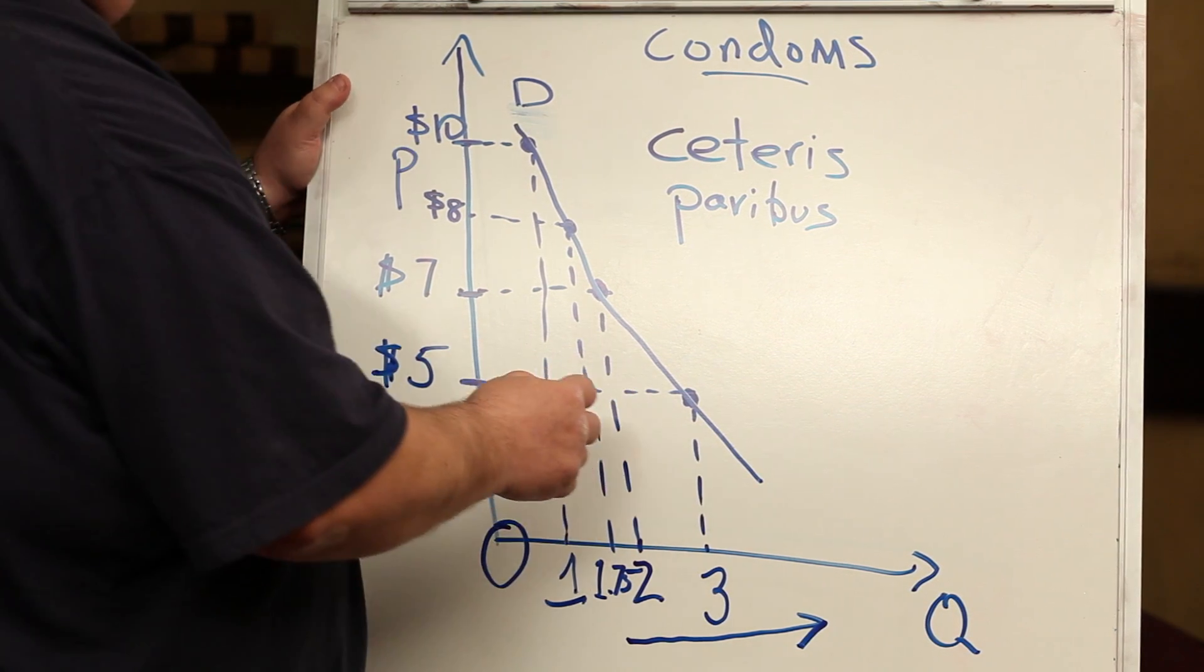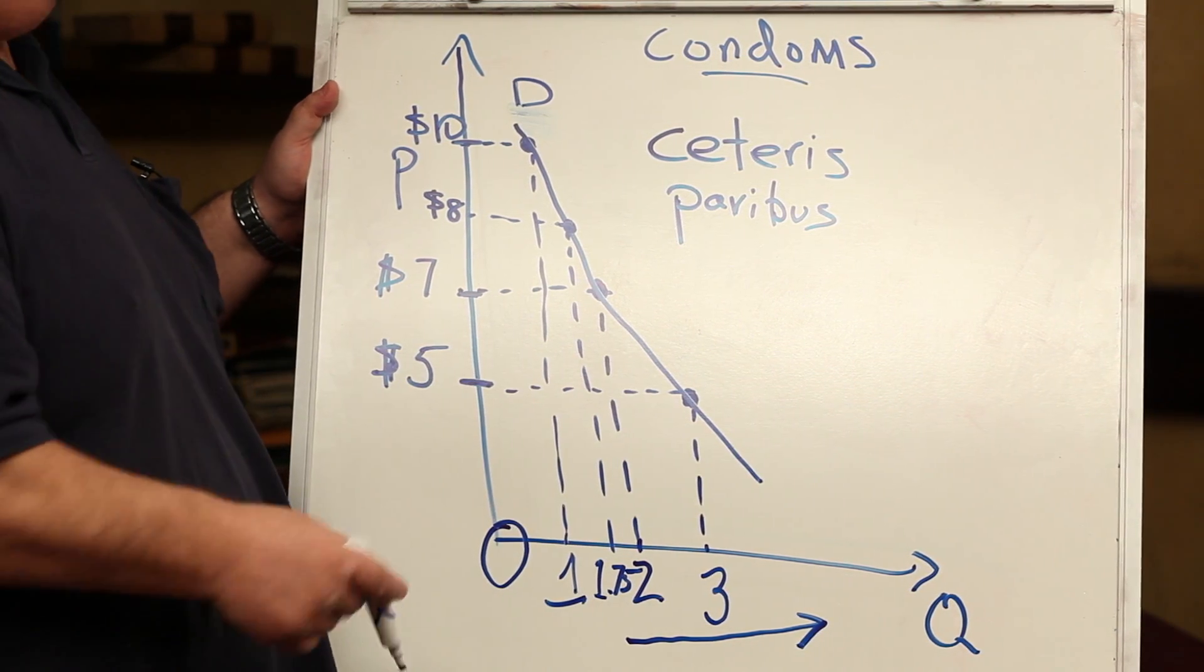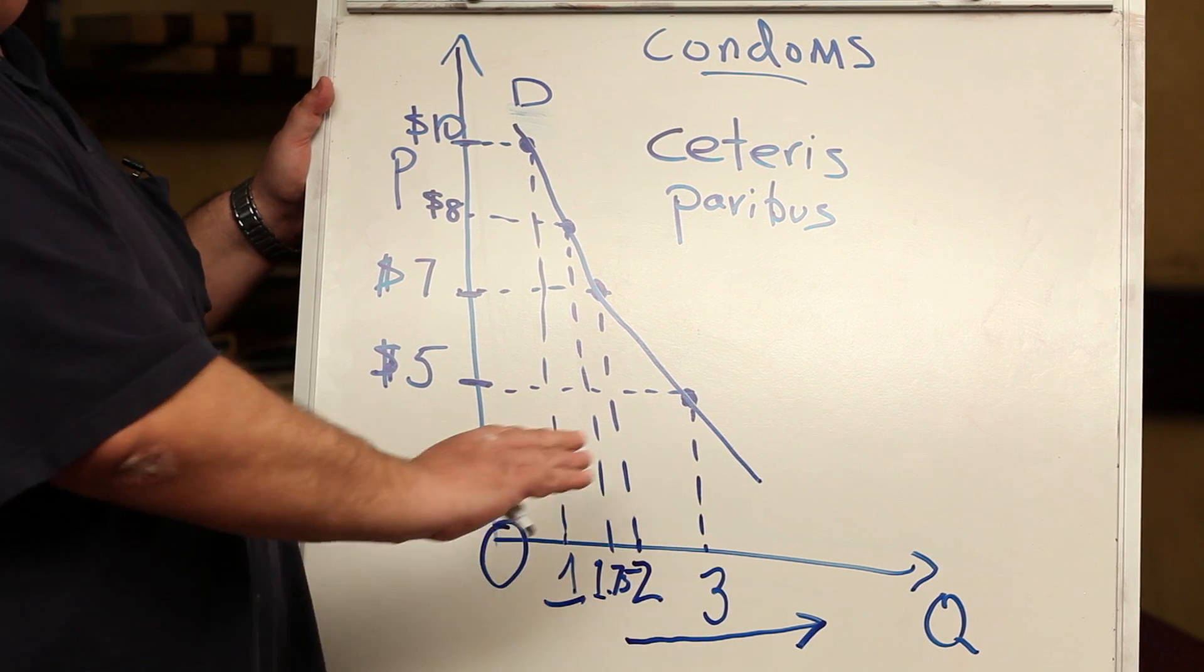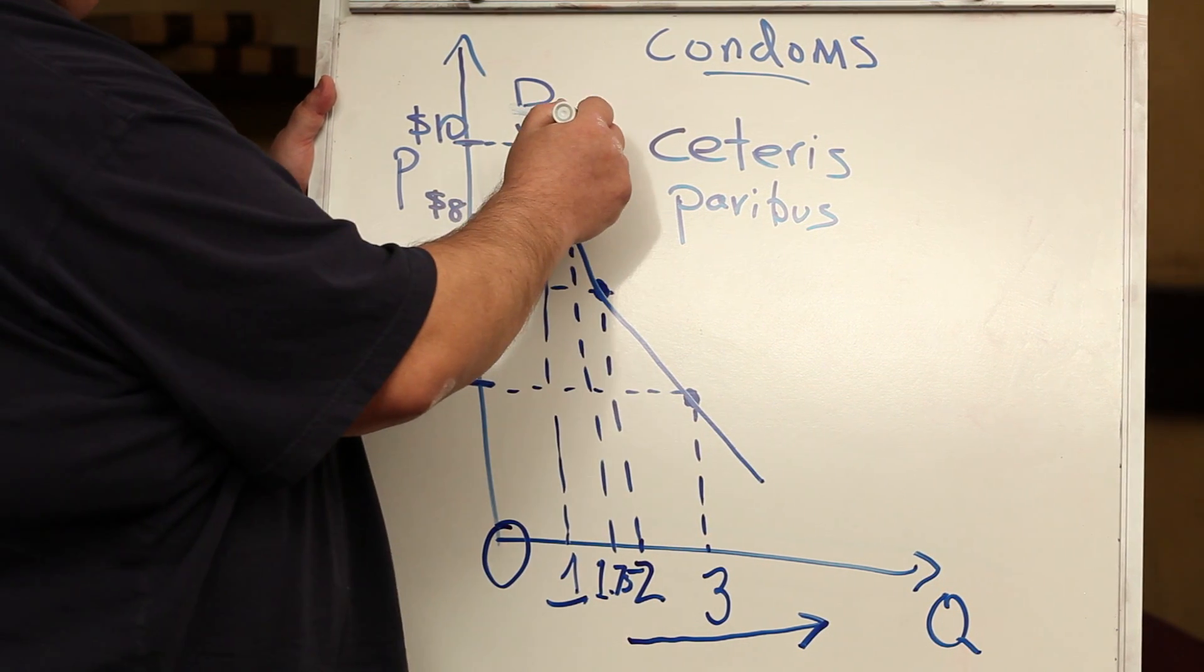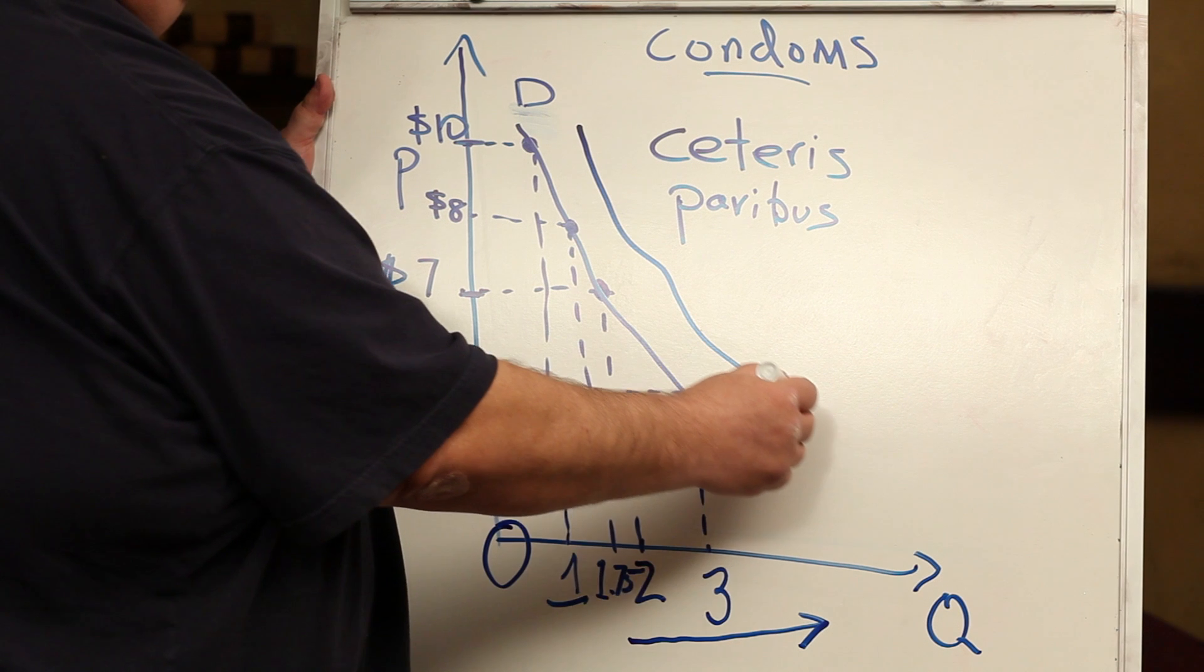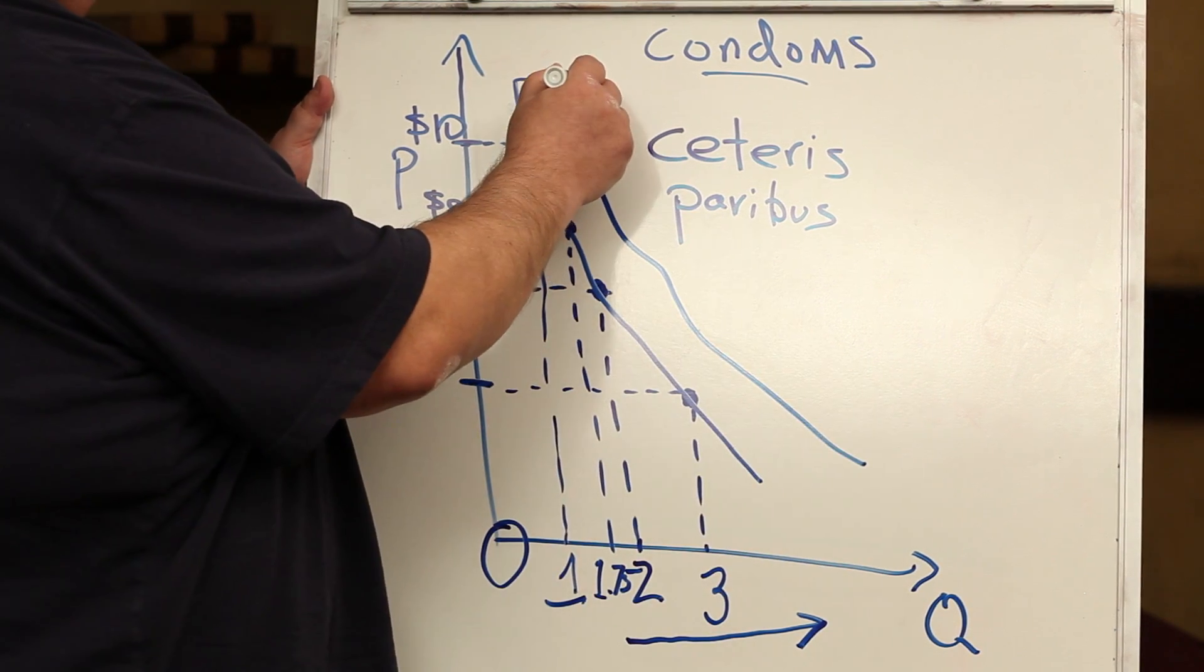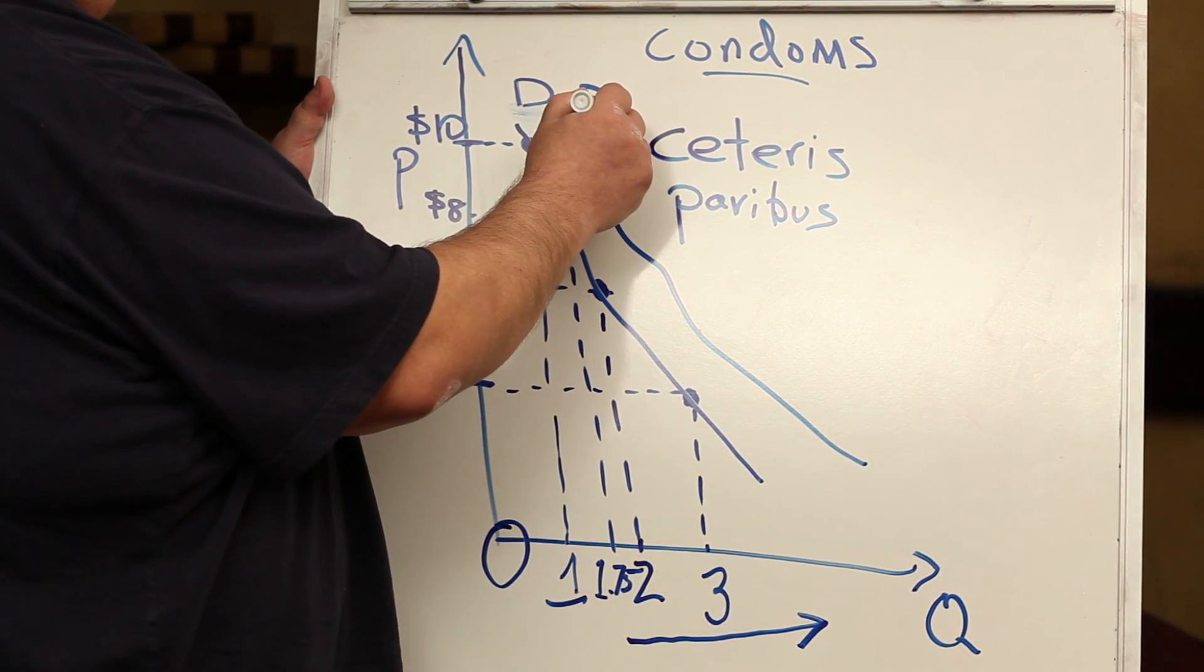I think that you'd be able to probably afford more condoms at any trip to the drug store. So your demand relationship, if income changed, which is not on this graph, would probably look something like this. I'll call it D1.